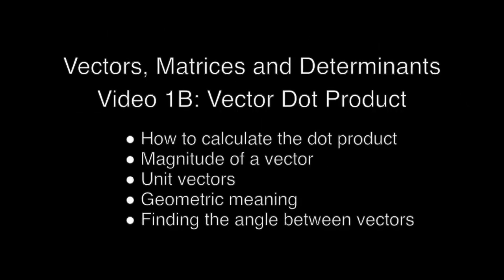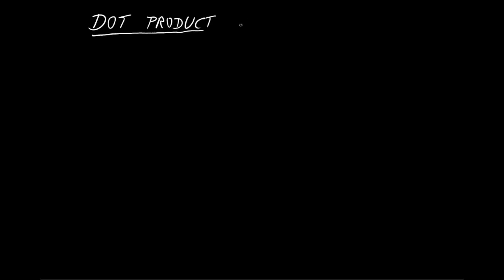Welcome to the second video. We're going to look at the vector dot product, also called the scalar product. We'll look at the magnitude of a vector, the meaning of unit vectors, the geometric meaning of the dot product, and finding the angle between vectors using the dot product. The dot product is a way of combining two vectors to produce a scalar — hence the alternate name scalar product.